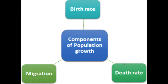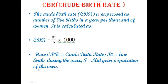Birth rate. CBR stands for Crude Birth Rate. It is expressed as the number of live births in a year per thousand of population. It is calculated by this formula: B divided by P, multiplied by 1000. B stands for live births during the year, and P stands for mid-year population of that area.